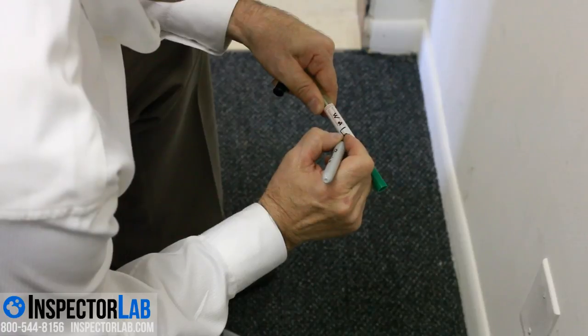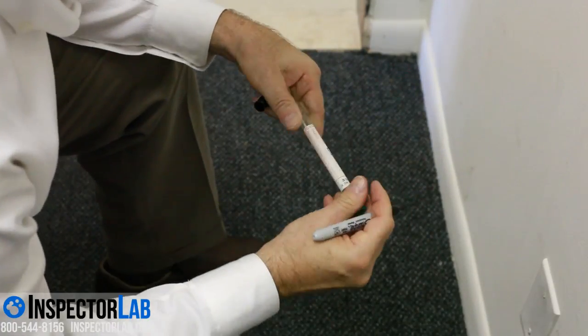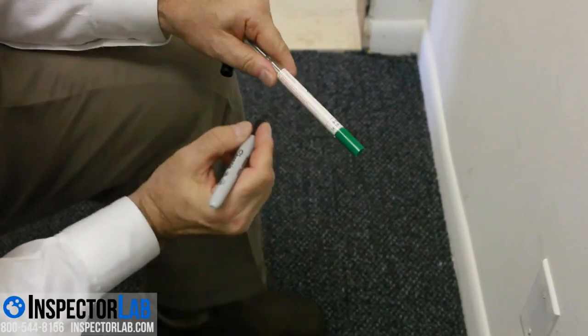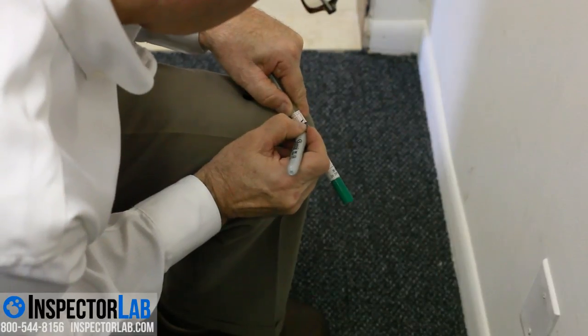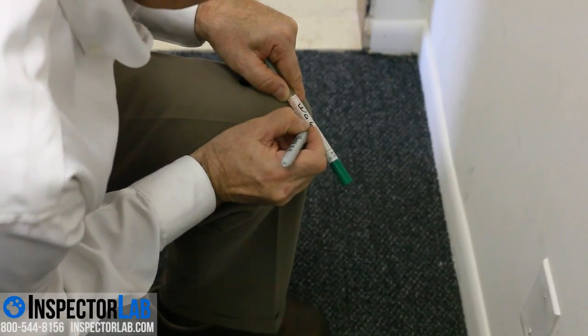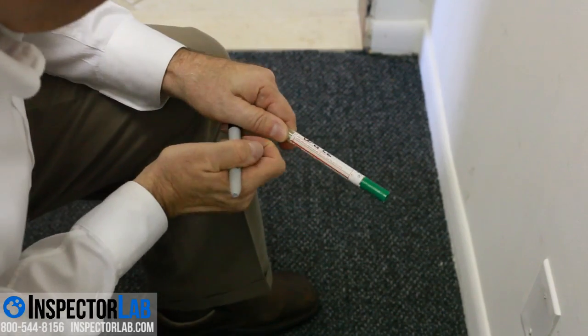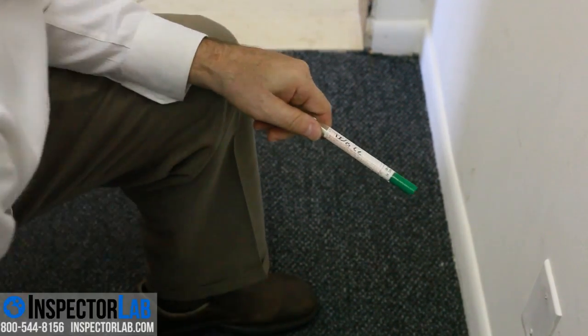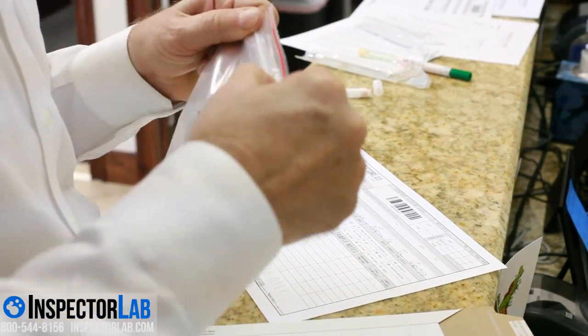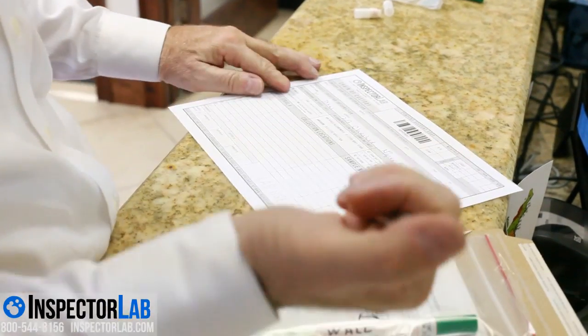Label the swab tube with the sample location and a serial number of your choosing or one that was assigned within the Inspector Lab application on your mobile device. Normally swabs are labeled swab number one, swab number two, etc., and the sample location is recorded on the chain of custody or in the Inspector Lab app on your mobile device.